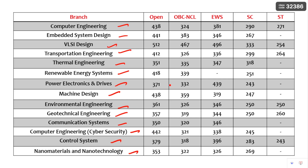You can pause the video and go through the cutoffs as per your category, and check which branch you are likely to get based on the cutoffs.